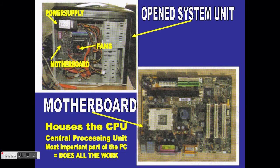If we open the system unit, inside we find all the wiring, the fans, the motherboard, and the power supply. Basically everything is mounted onto the motherboard. Here you can see the place where the CPU is fitted, and there are your ports — we will discuss those in a later lesson on I/O.